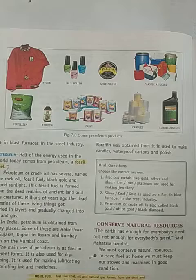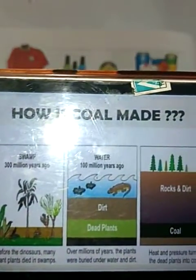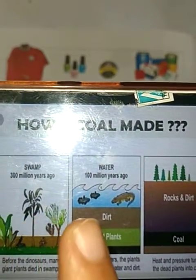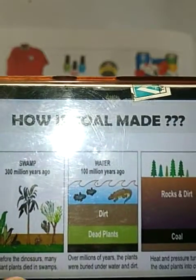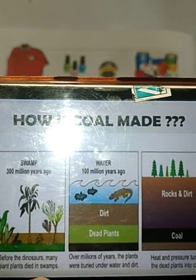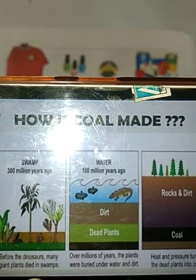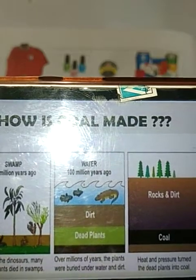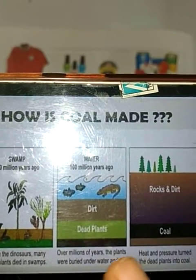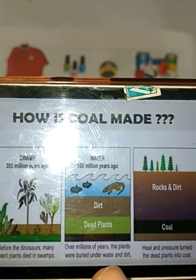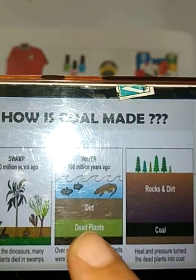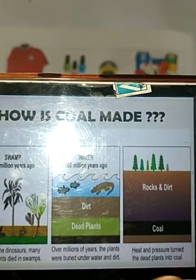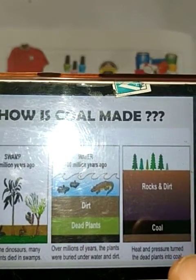This is the structure for coal. By the diagram you can easily relate what is shown. This was 300 million years ago — before the dinosaurs, many giant plants died in the swamps. After that, over millions of years, these plants were buried under the water and dirt.